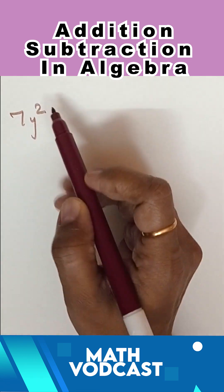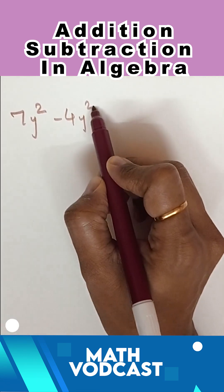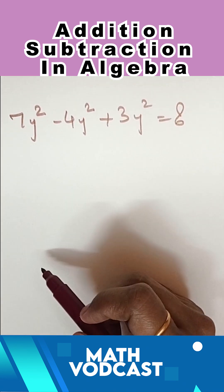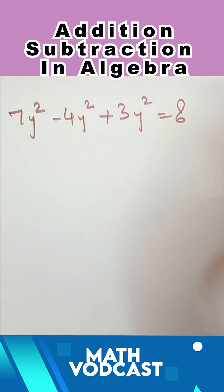Suppose we have 7y² minus 4y² plus 3y², and we need to find the answer. All the coefficients are the same, so we will club them together.